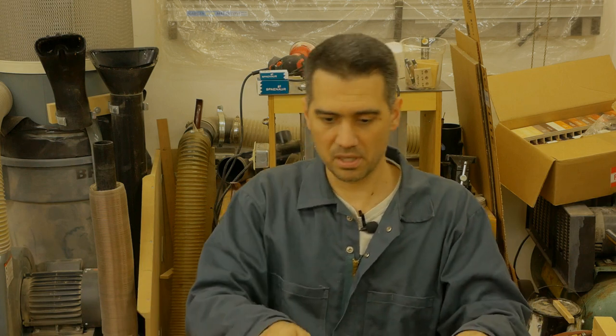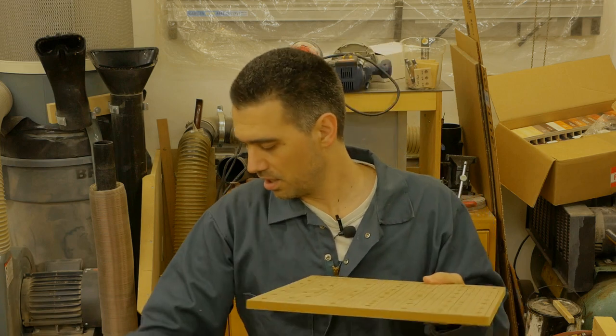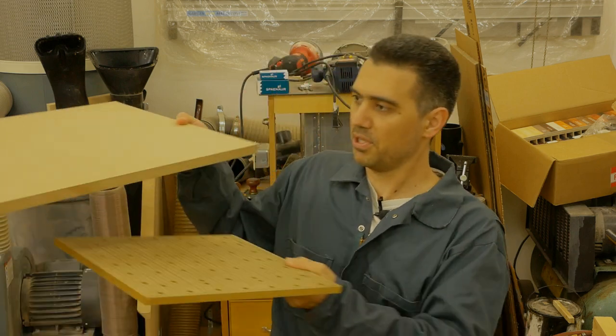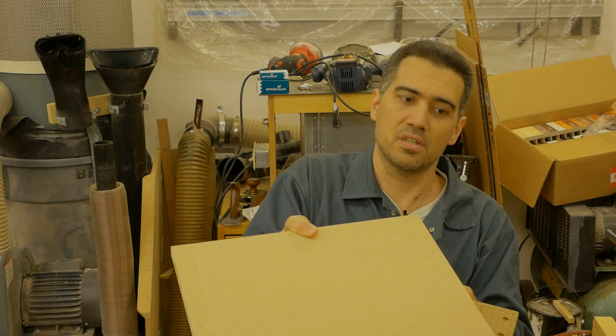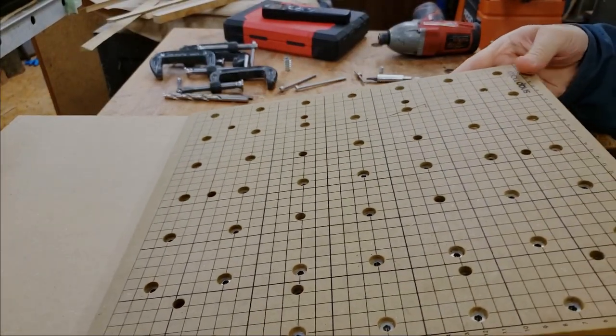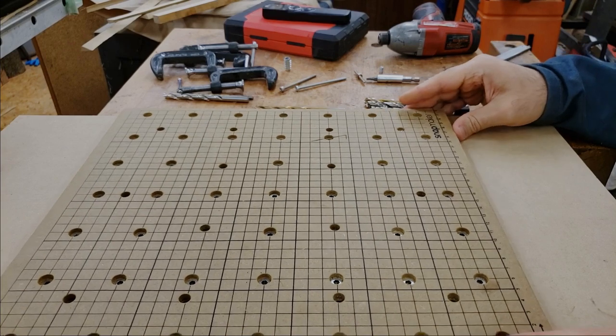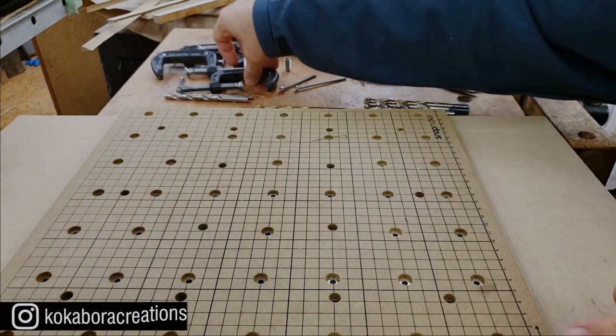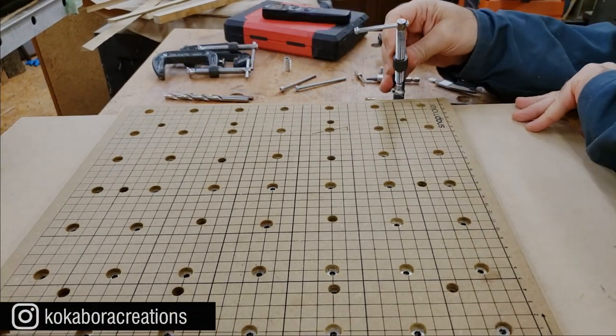We're going to take the new thicker piece of MDF, which in my case is 19 millimeters. We are going to place the existing Snapmaker wasteboard and clamp it on at least two locations.